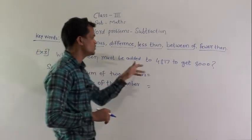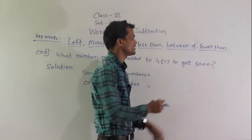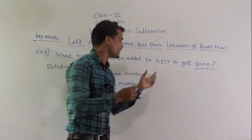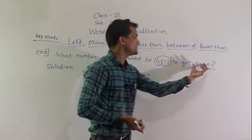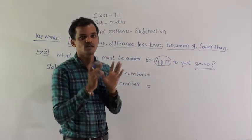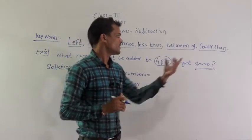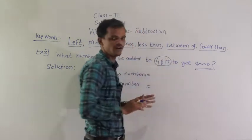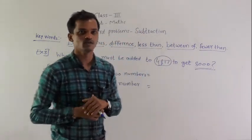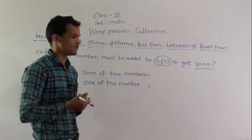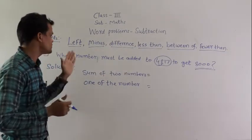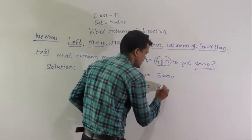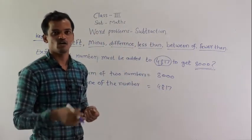Example 3: What number must be added to 4817 to get 8000 as the answer? We need to find which number to add to 4817 to get 8000 as the sum. Here, 8000 is the sum of two numbers — one number is 4817, and the other number we have to find out. Write the things given: sum of two numbers is 8000, and one number is 4817.